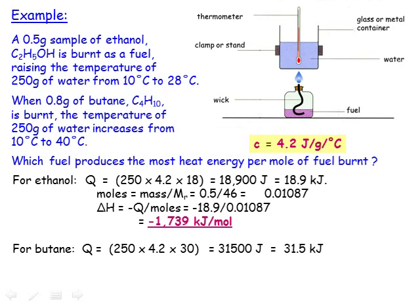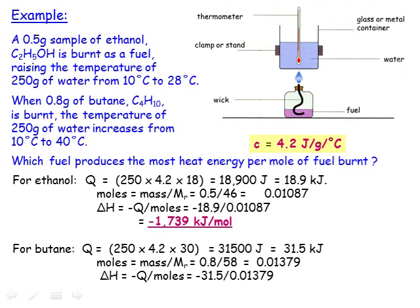If we repeat these calculations for butane, we see that 31.5 kilojoules were released when the butane was burnt, and that we burnt 0.01379 moles of butane. So the molar enthalpy change is minus 2284 kilojoules per mole. We can therefore conclude that butane releases more energy per mole when burnt as a fuel compared to ethanol.